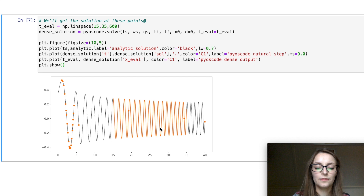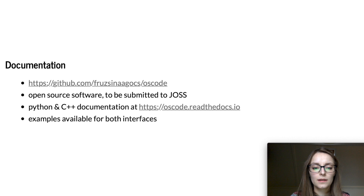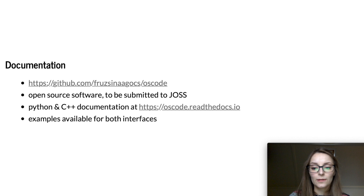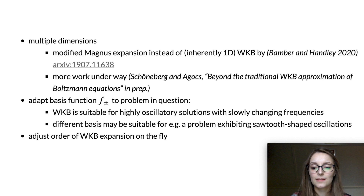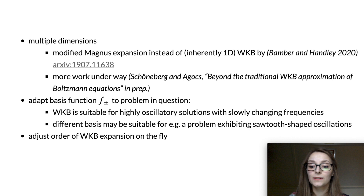Pyoscode is open source. It will be soon submitted to the Journal of Open Source Software, and you can find it on GitHub and documentation on Read the Docs. On GitHub you can also find examples for the Python interface and a C++ interface not covered today. The development of Pyoscode is far from over — the most immediate extension is generalization to multiple dimensions. The WKB expansion is inherently one-dimensional, but research has been done to replace it with a multidimensional Magnus expansion by Bamber and Henley in 2020, and work is currently underway to implement this.